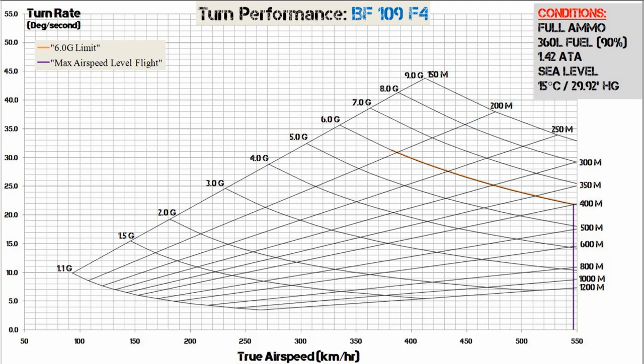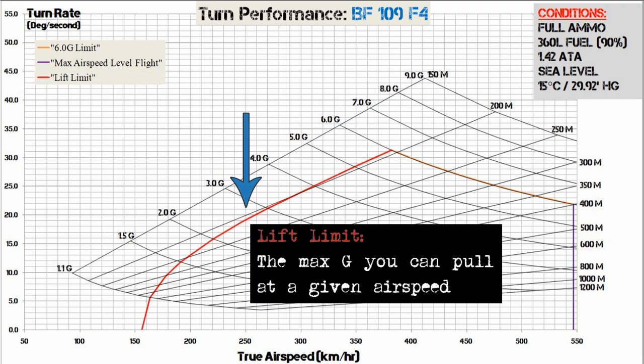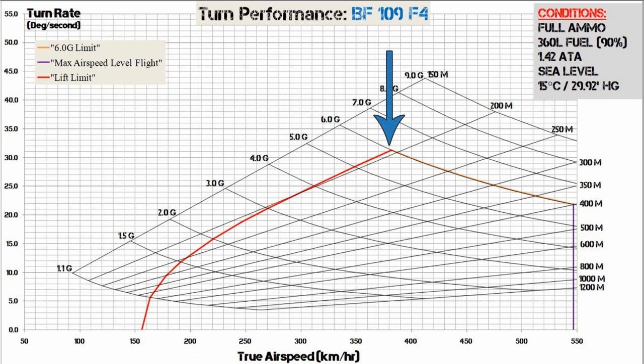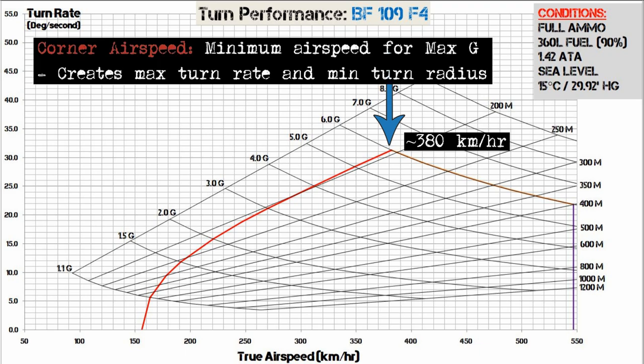The next part is calculated from the airplane's 1G stall speed, and it's called the lift limit. This is the maximum G you can pull for a given airspeed. If you're pulling more G than a given airspeed will allow, you'll enter an accelerated stall. Where the lift limit meets the upper G limit is called your corner airspeed — the minimum airspeed at which you can generate maximum G, and the point where you achieve maximum turn rate and minimum turn radius.